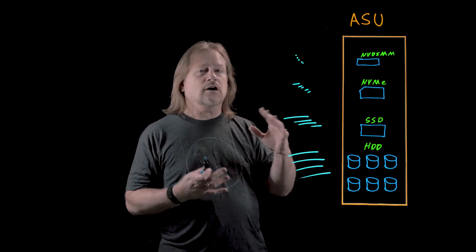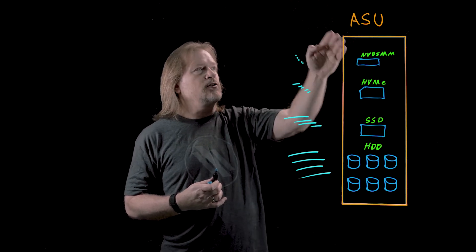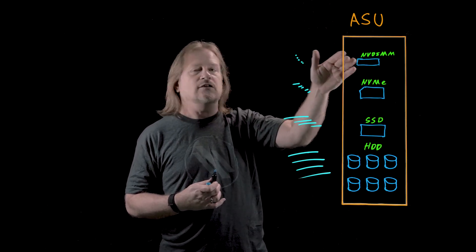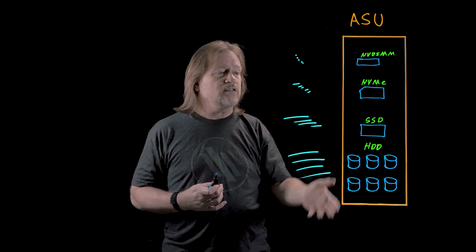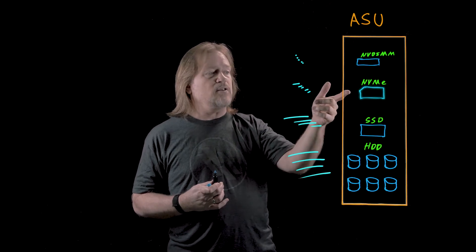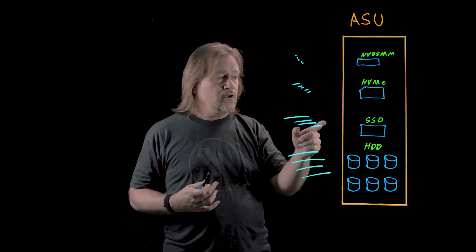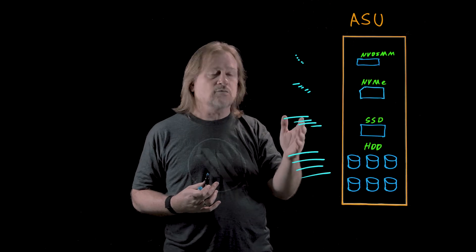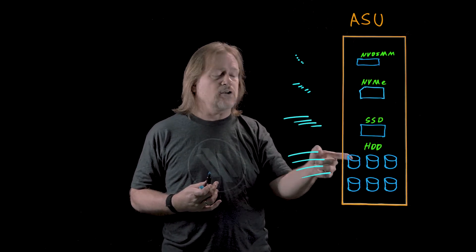Let me describe how we use these, and then we'll talk about the effect of that. A transaction comes in from a client and goes into the NVDIMM. The data and metadata is logged into the NVDIMM, and the application goes on its way. Then all the rest of this happens asynchronously. We're going to read and write metadata from the NVMe drive as necessary. If it's a small file, it's going to go into the flash. If it's a large file, it's going to go to the hard drives.